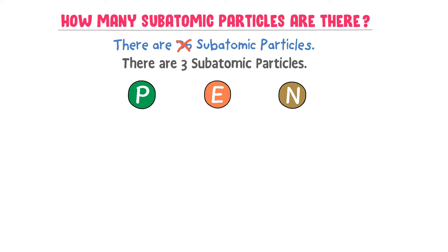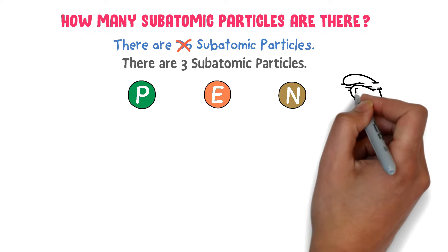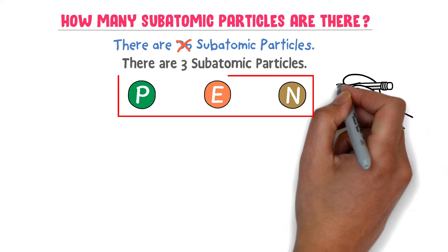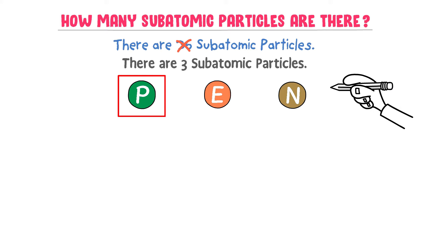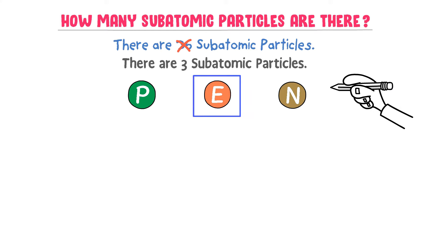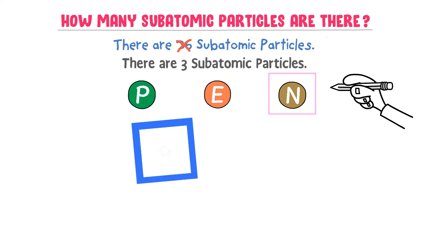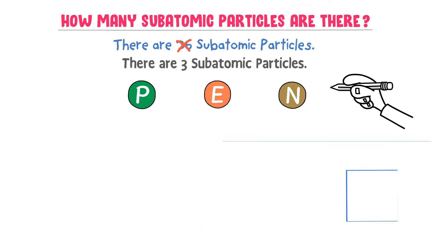The easy trick to remember subatomic particles of an atom is to remember PEN. P stands for proton, E stands for electron, and N stands for neutron. Thus, note that there are three subatomic particles.